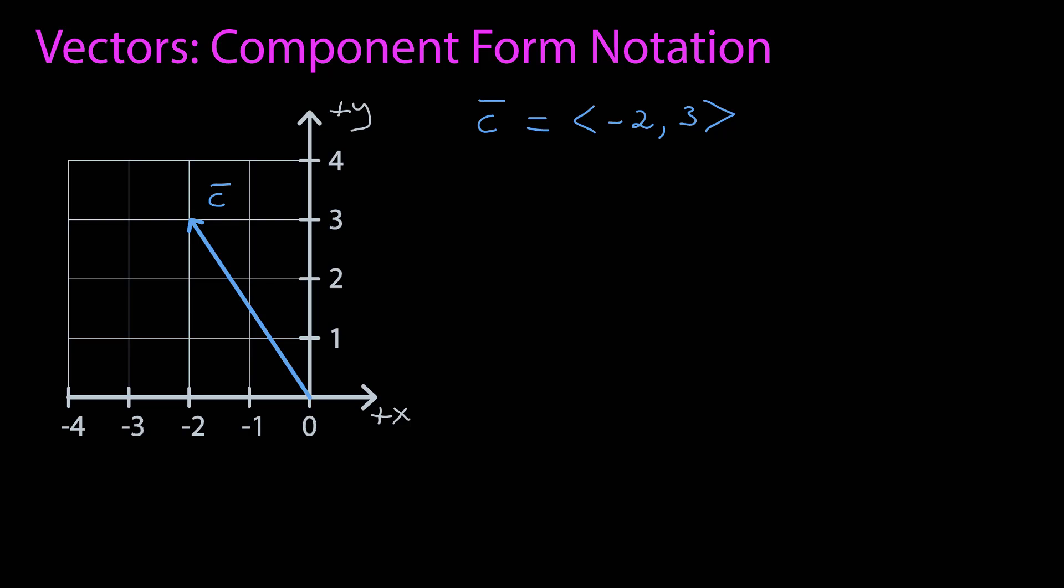In this video we're going to look at vectors in the component form notation. I have a vector c whose tail is at the origin and tip is at the point. In the ordered set notation it is given by this.